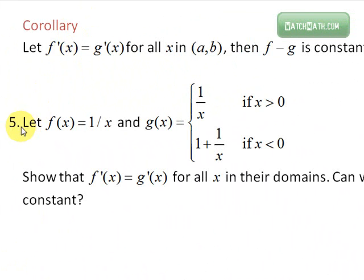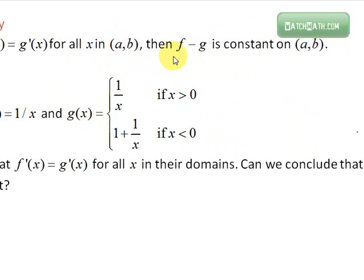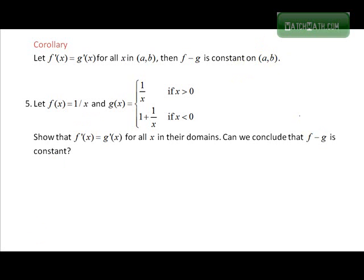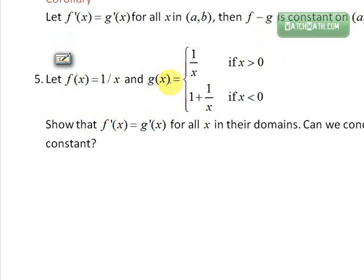Problem number five. Before we work on it, here is the corollary of the Mean Value Theorem, which says that if the derivative of two functions are equal for every x in an open interval, then f minus g is constant. The condition is that we need the derivative to be equal on the open interval. Now we have f of x equal to one over x, and g of x is given by a piecewise function.